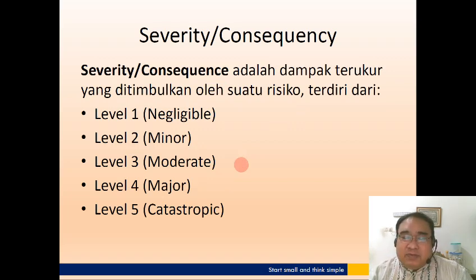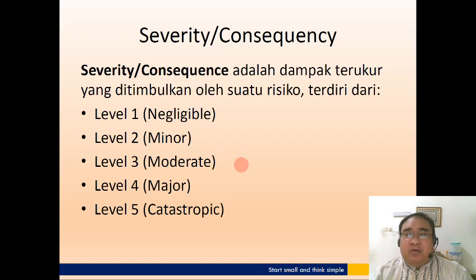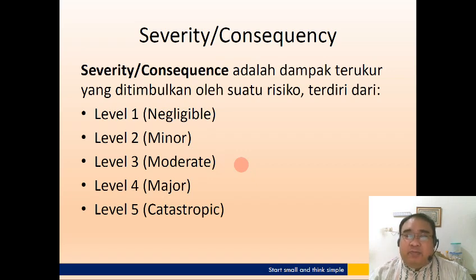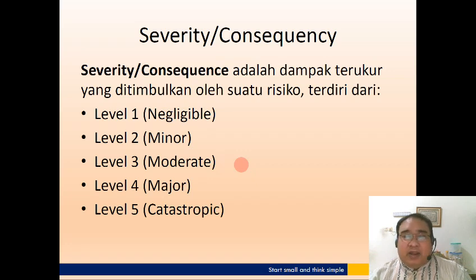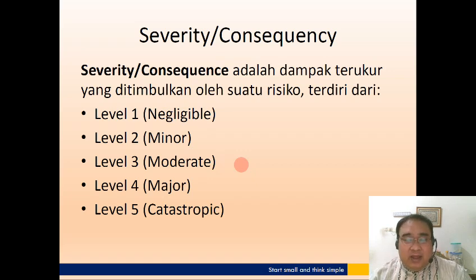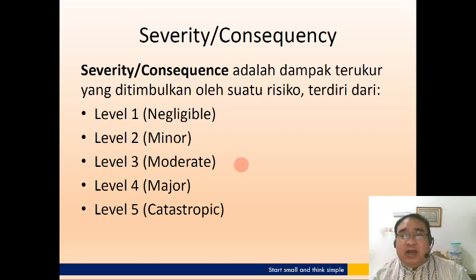Faktor yang penting dalam mempertimbangkan resiko adalah faktor severity atau konsekuensi atau dampak dari resiko tersebut. Suatu resiko memiliki dua faktor utama yaitu severity dan probability. Severity itu dampak, dan probability itu adalah kemungkinan keterjadiannya. Resiko yang paling besar adalah yang severity-nya tinggi dan kemungkinan terjadinya sering, atau dari sisi severity masuk dalam level 5 — catastrophic — dan frekuensinya juga sangat sering.